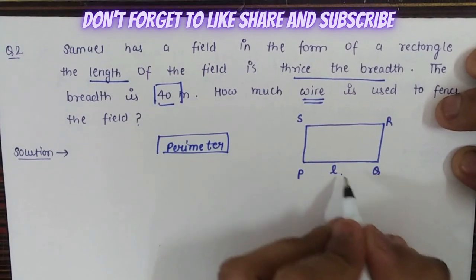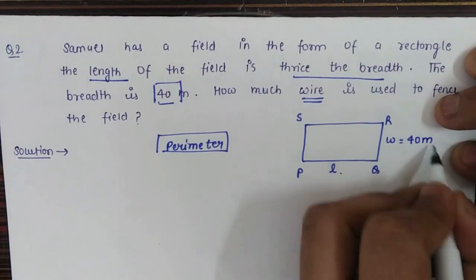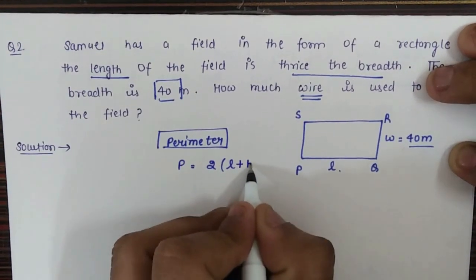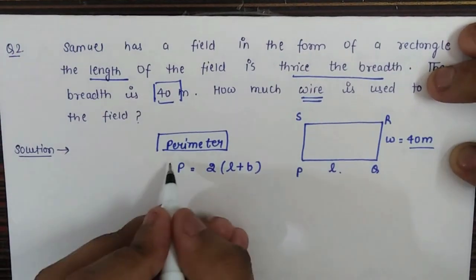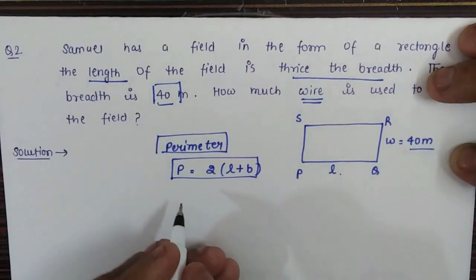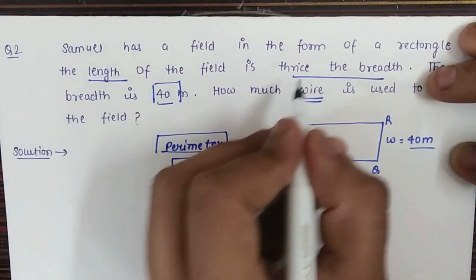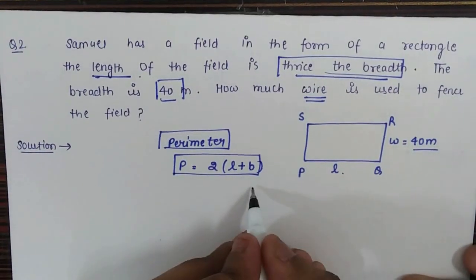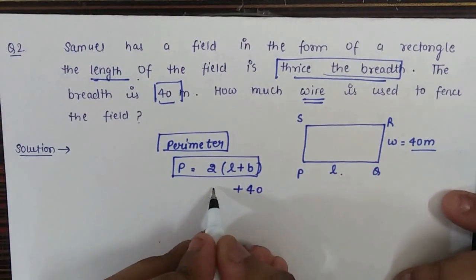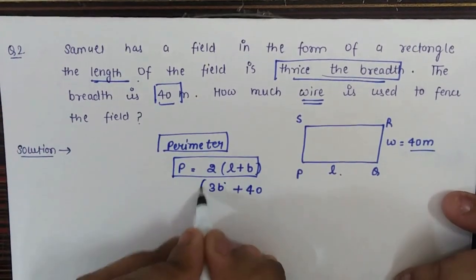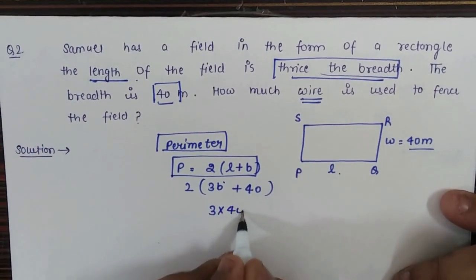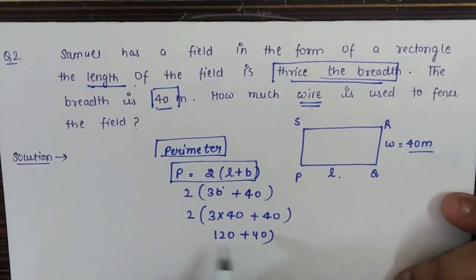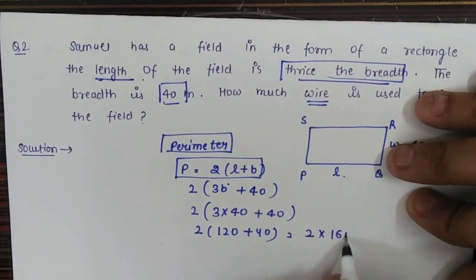For a rectangle, the length and width are as shown. The width is given as 40 meters. The perimeter for a rectangle is twice of length plus breadth. There is another condition: length equals 3 times the width. So length is 3 into 40, which is 120. The perimeter is 2 multiplied by 120 plus 40, which is 2 multiplied by 160.